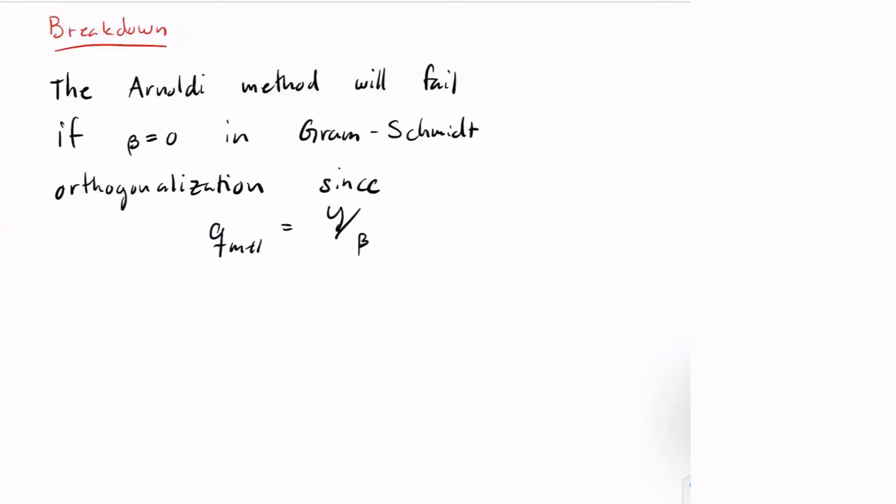This video is about the concept called breakdown. Breakdown can happen in the Arnoldi method because at some point you're dividing by beta, which potentially can be zero, and that's what we call breakdown.